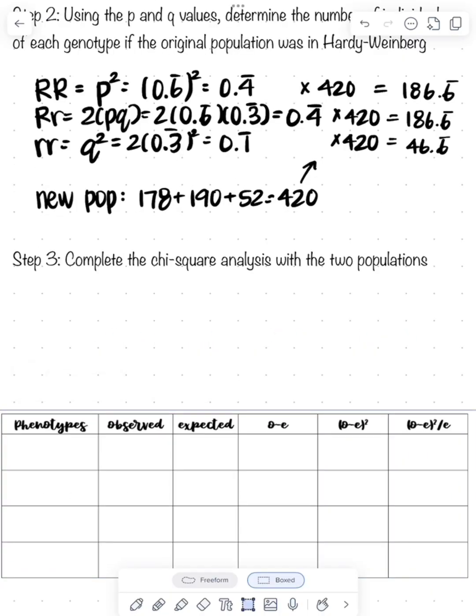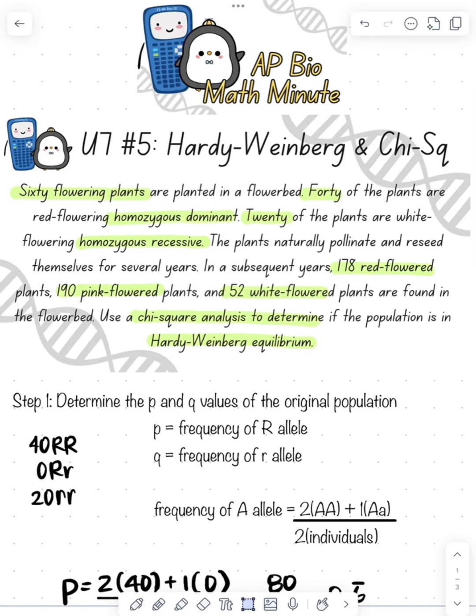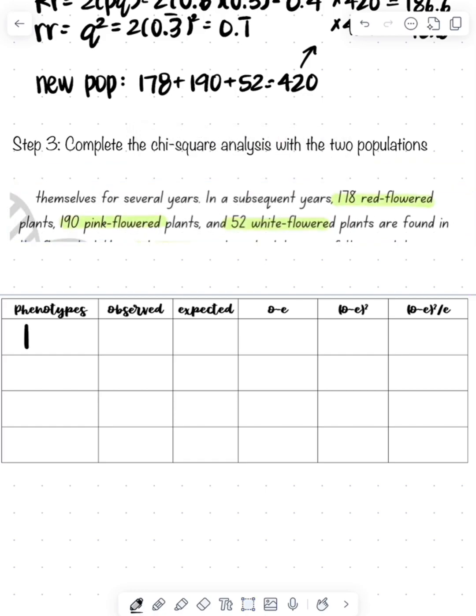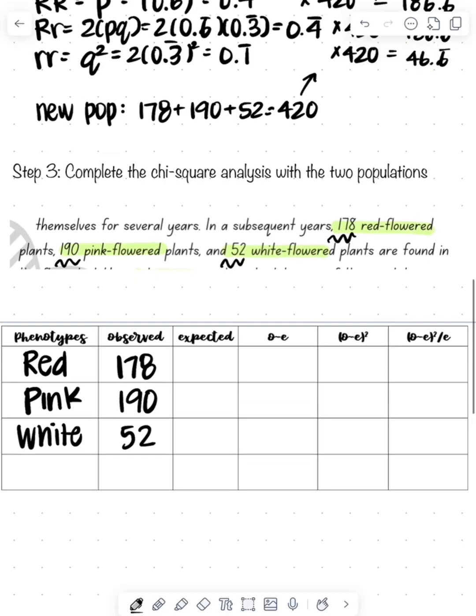Now I need to do the chi-square analysis. I'll go back up to the top and pull the data so I can see how many of my observed there were. I can fill in my chart now. So I have red, I have pink, and I have white. I can see 178 were red, 190 are pink, and 52 are white.